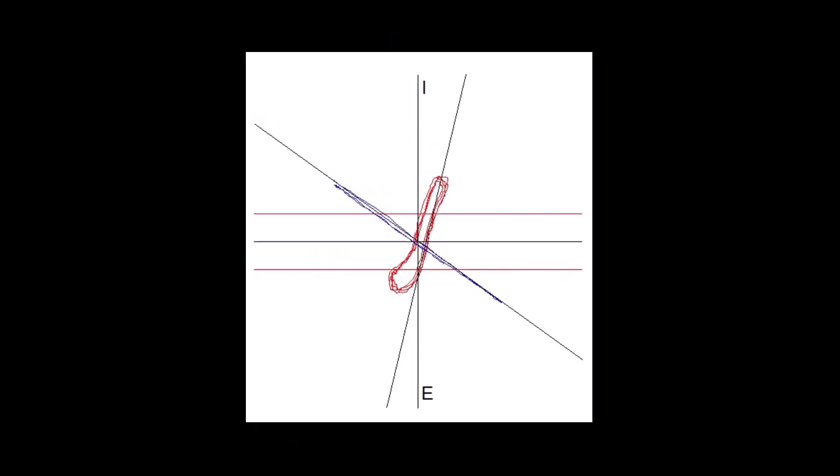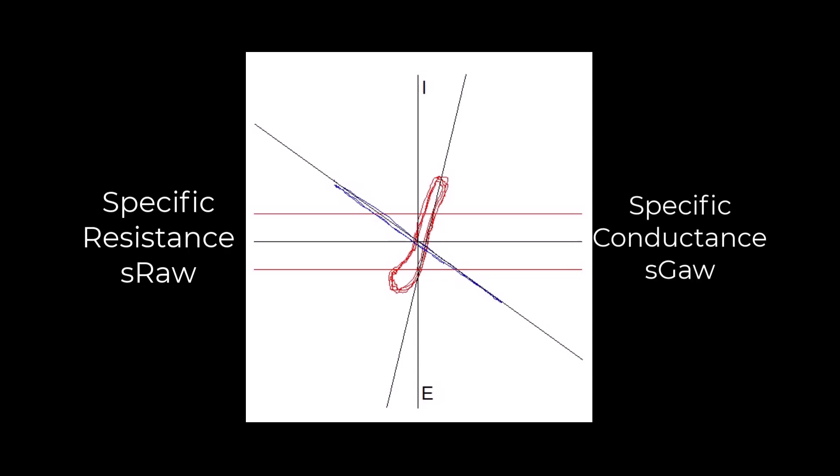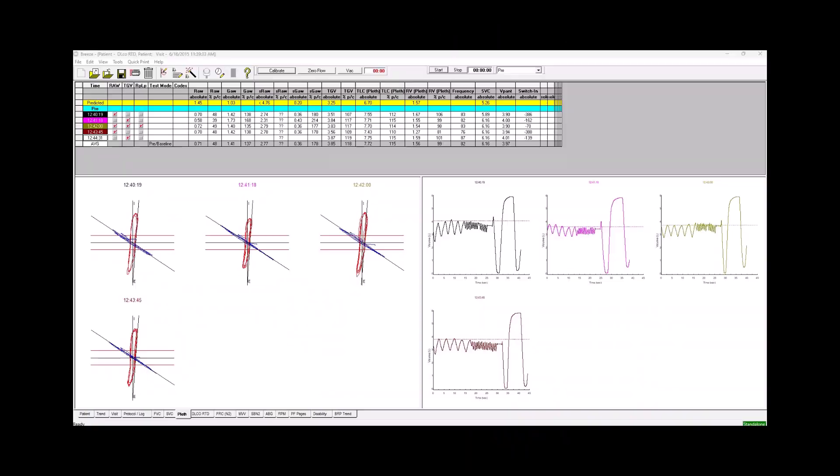For airway resistance testing, the graph will have two tracings overlapping each other. The blue tracing is the closed shutter breathing, which measures lung volumes as previously mentioned. The red tracing is the open shutter panting, which measures airway resistance. Lung volumes are measured with airway resistance in order to calculate the volume of gas in the lungs during open shutter panting, which then allows the software to calculate specific resistance. Draw all of the efforts and look to see if any adjustments to the line of best fit are needed.